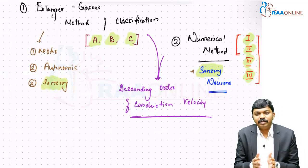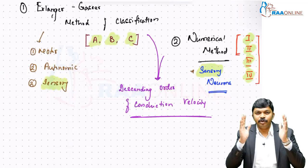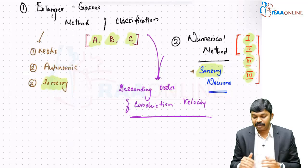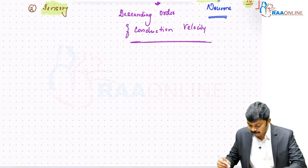Surprisingly, both methods adopt one basic principle: the neurons with highest conduction velocity are arranged at the top of the table. The neurons with least conduction velocity are arranged at the bottom of the table.